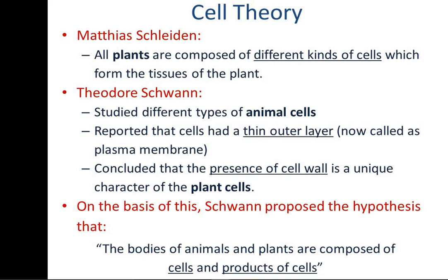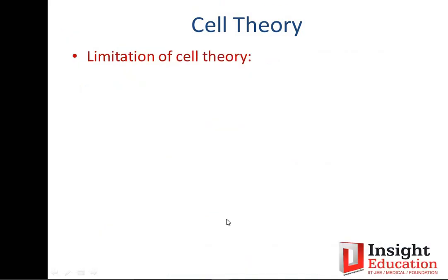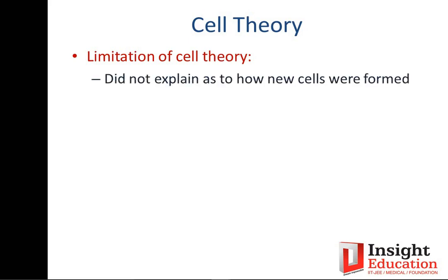You need to remember the year in which they proposed their theories, and which one is a botanist and which is a zoologist. Now, there is a limitation of cell theory — there was no explanation for how new cells are formed, how the cell works as a unit of life. The structural and functional understanding was there, but not the origin of new cells.